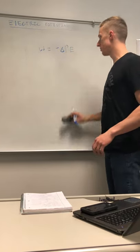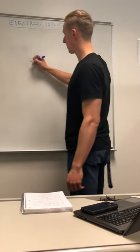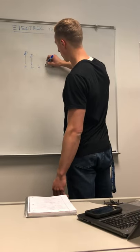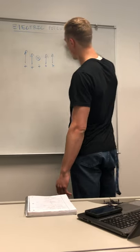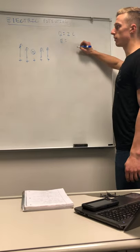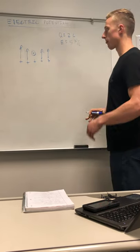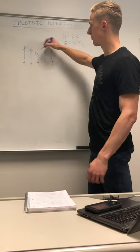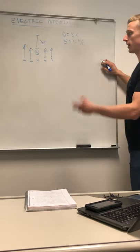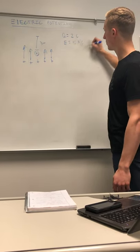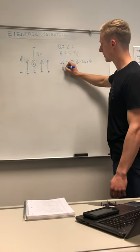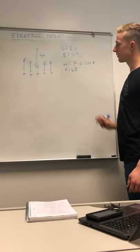We're going to do a problem using what we just learned. We have a positive electric field pointing up the board, a positive charge of two coulombs, and the electric field is equal to five newtons per coulomb. This electric field moves the charge from one point to another with a distance of three meters. To find the work done, we use: work equals force times distance times cosine of theta, and force equals charge times electric field.